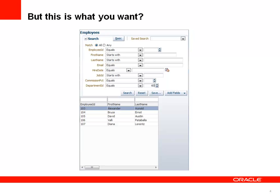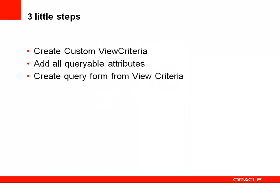Starts with, ends with, contains — this is the advanced mode. If you want your ADF search form to start in advanced mode, that is not what you get by default. To implement that solution, three little steps are required. First, create a custom view criteria — a named where clause as I will detail later in the demo. You will add all queryable attributes as the default implementation does, and then the search form is created from your custom view criteria, no longer from the default.